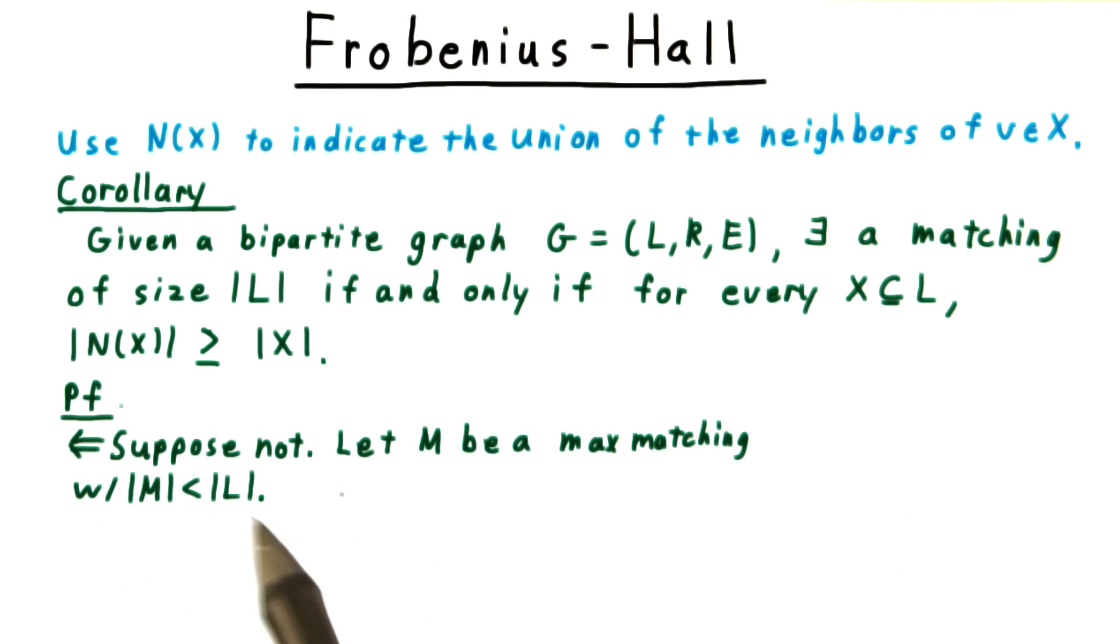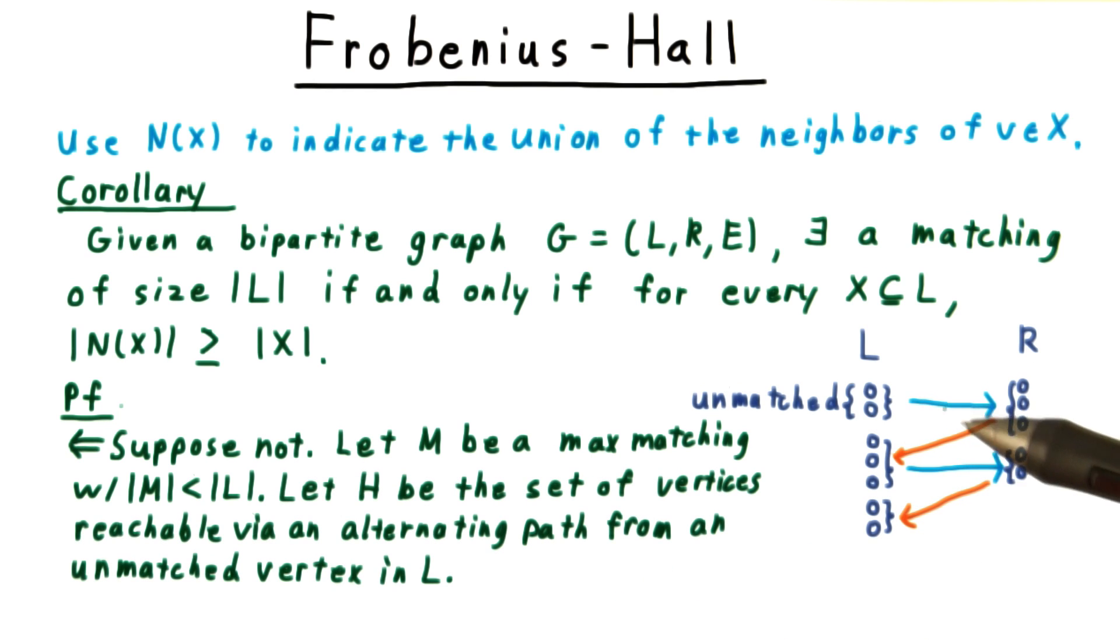The other direction is a little more challenging. Suppose not. Let M be a max matching with cardinality strictly less than the cardinality of the left-hand side. We let H be the set of vertices reachable from an alternating path from the unmatched vertices in L.